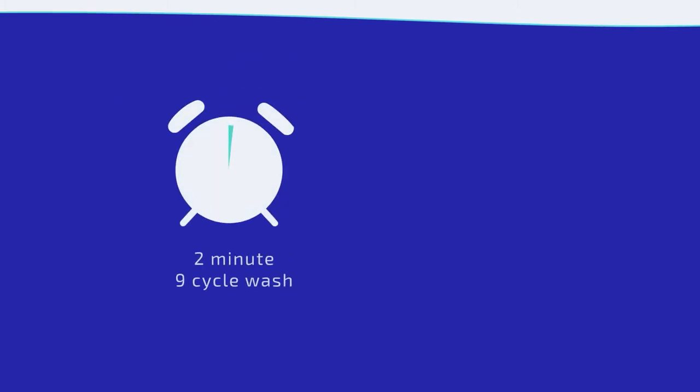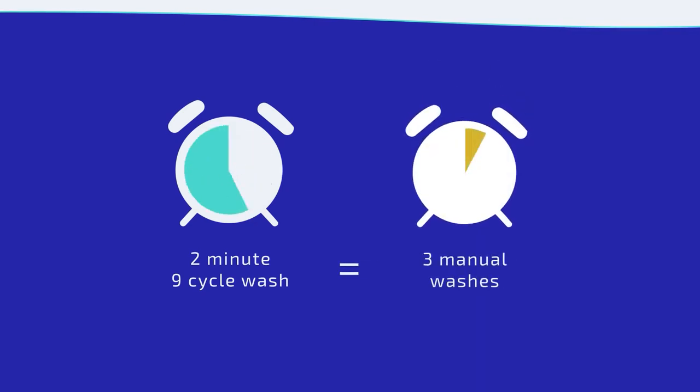A 9-cycle wash of 2-minute duration by laminar wash system shows washing efficiency the same as 3 washes using a centrifuge.